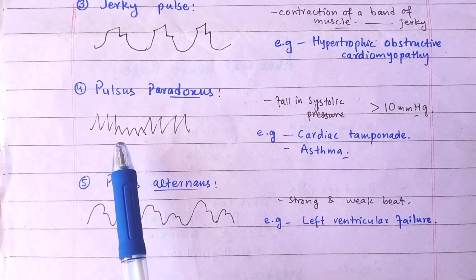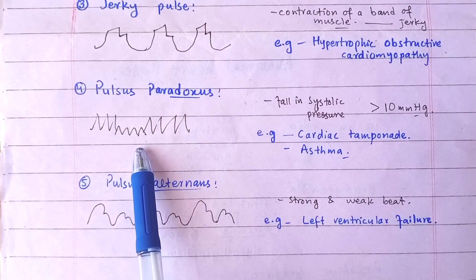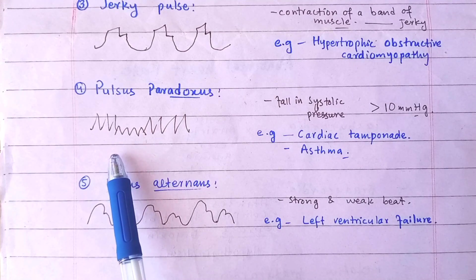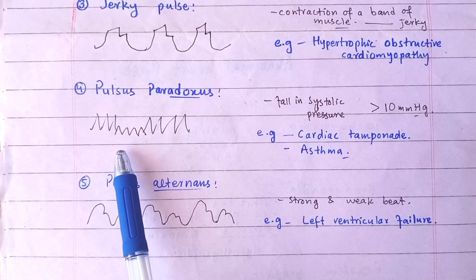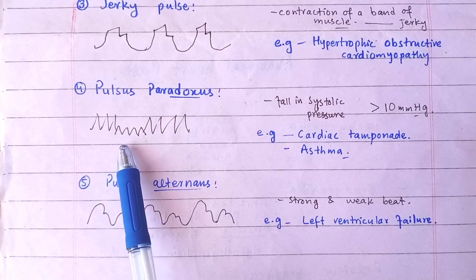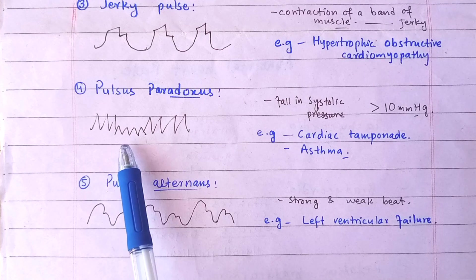In pulsus paradoxus, difference between these two levels is more than 10 mm of mercury. The waveform of pulsus paradoxus is like this. This is the waveform of cardiac tamponade, in which there is fall in the systolic pressure more than 10 mm of mercury.